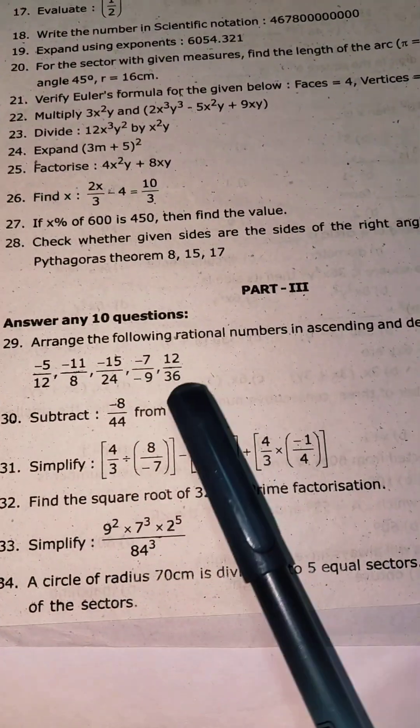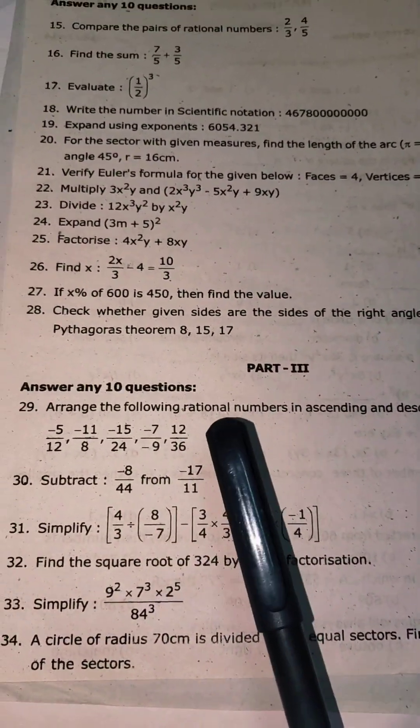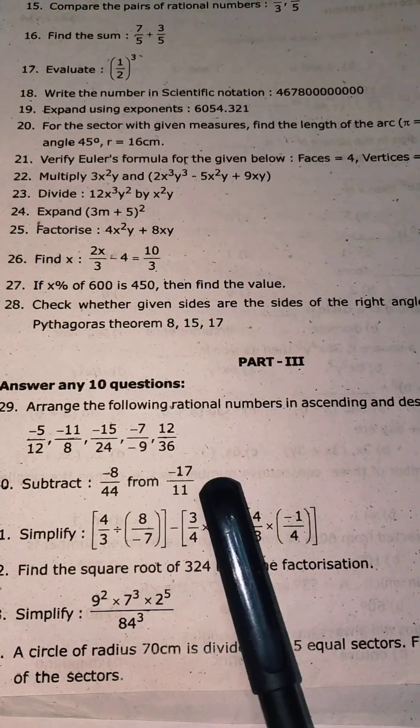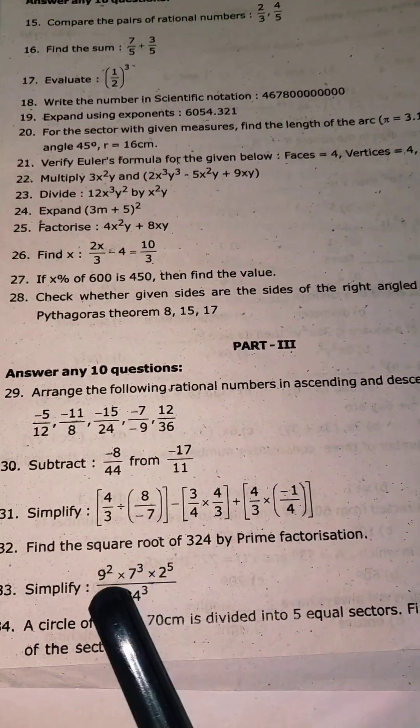Let's look at the questions. Let's look at the 5 mark. Let's look at the ascending, descending order. It's a 5 mark. Subtract. Minus 8 by 44 from minus 17 by 11. Let's simplify the question.